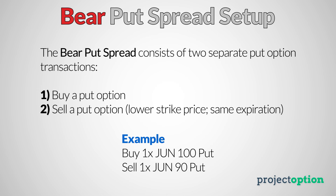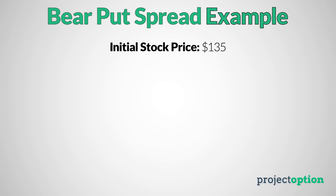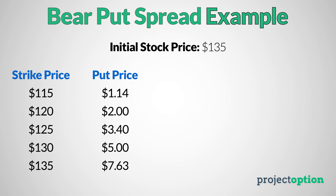By selling a put option against the put option that was purchased, the position will have less profit potential compared to just buying a put all by itself. Let's take a look at a hypothetical long put spread position, look at the expiration profit and loss graph, and then we'll move on to some real trade examples to see the strategy in action. For this bear put spread example, the stock price at the time of entering the position is $135.